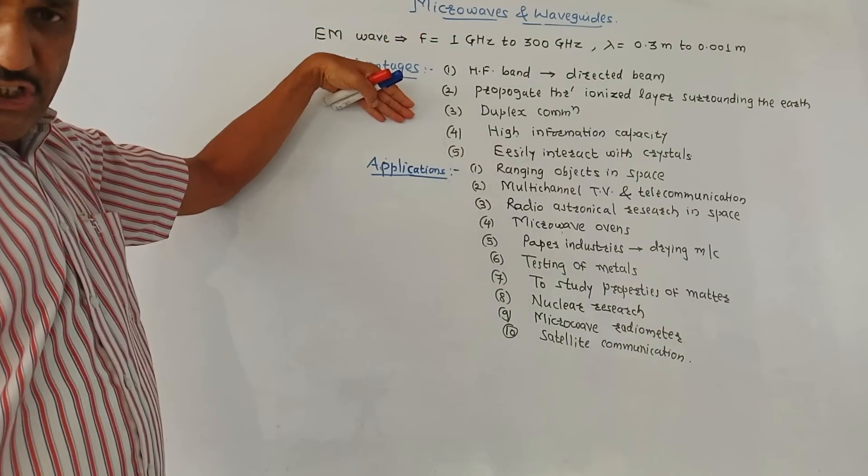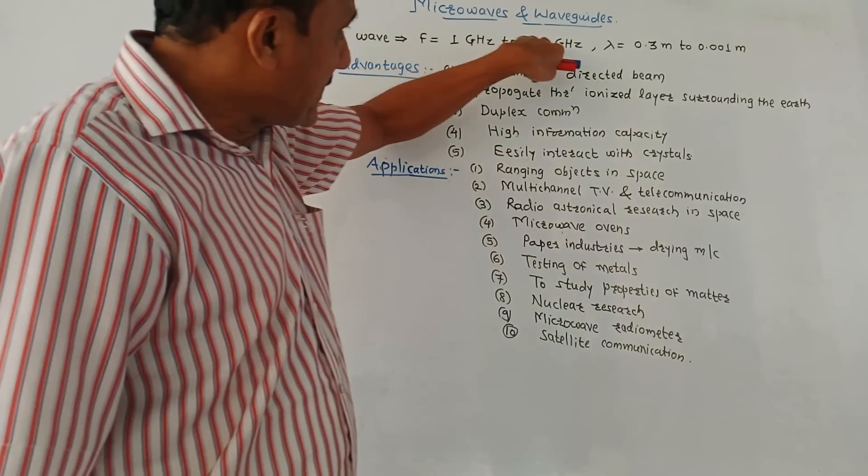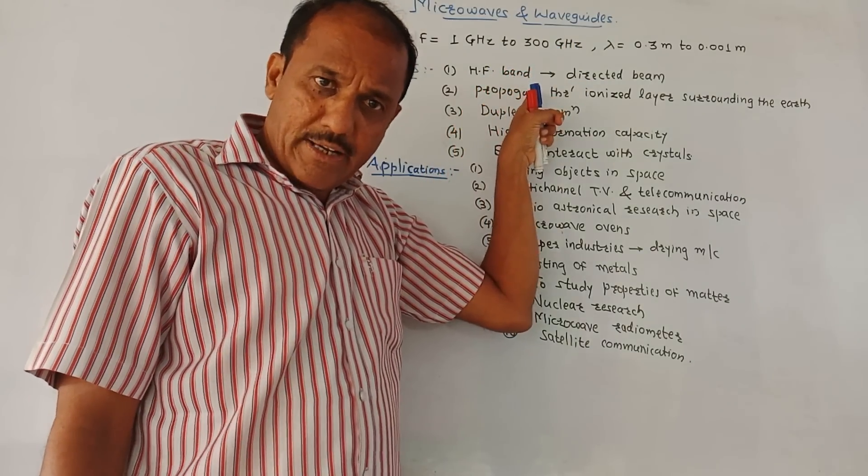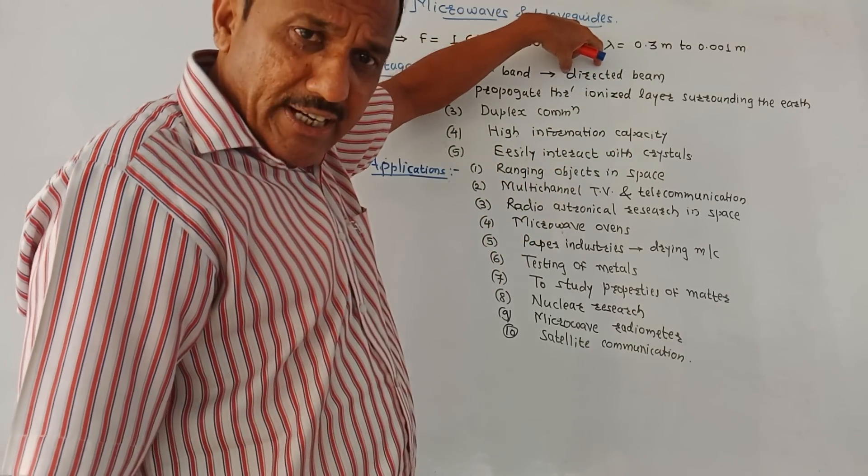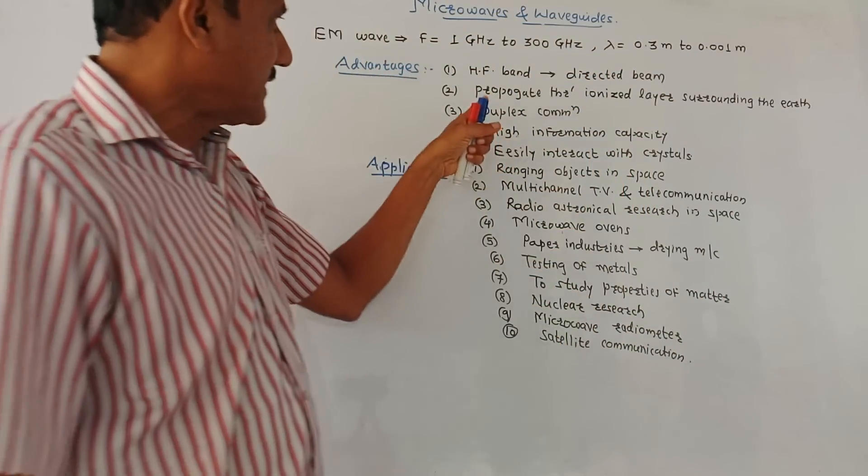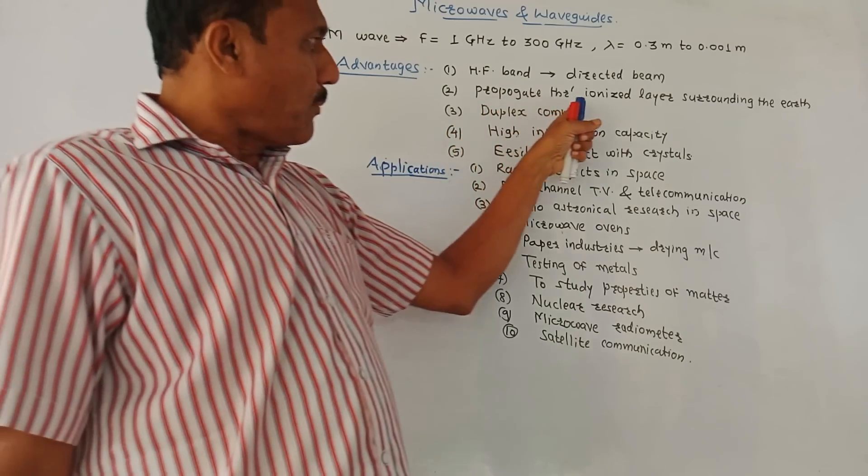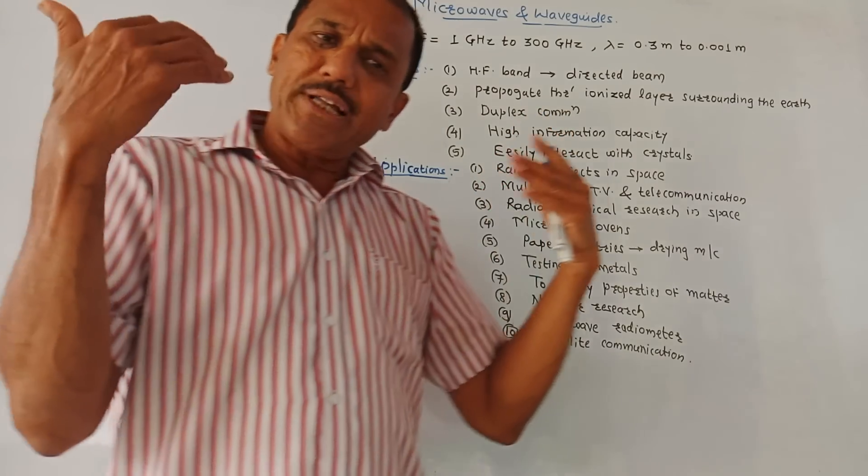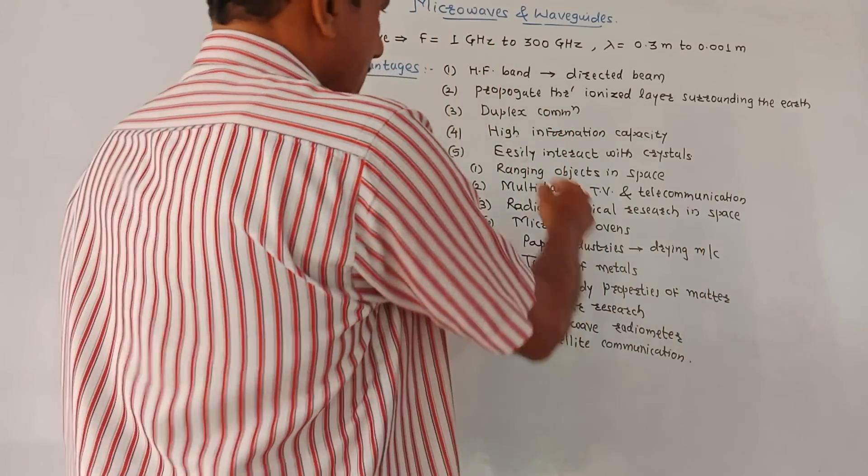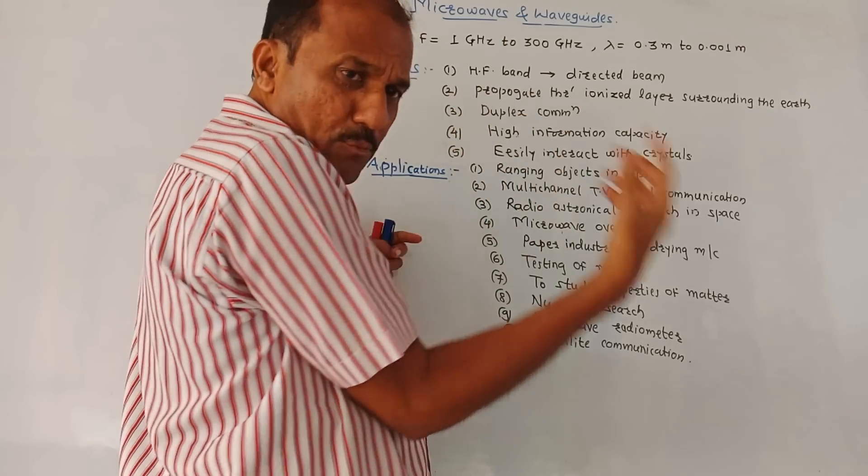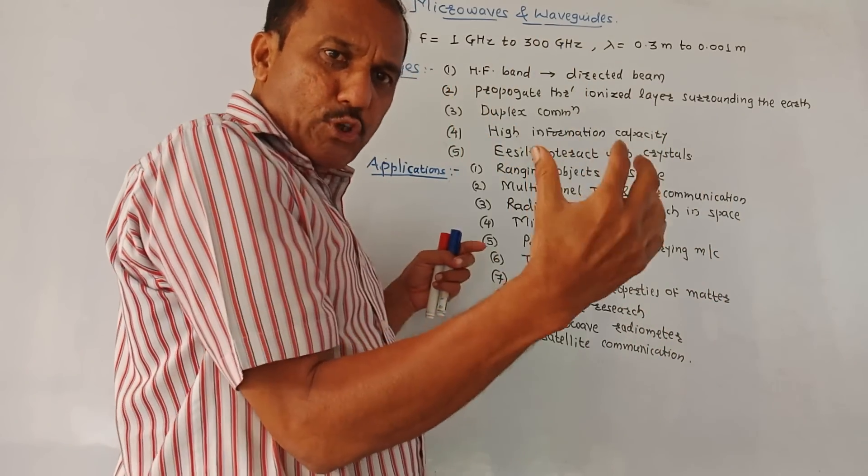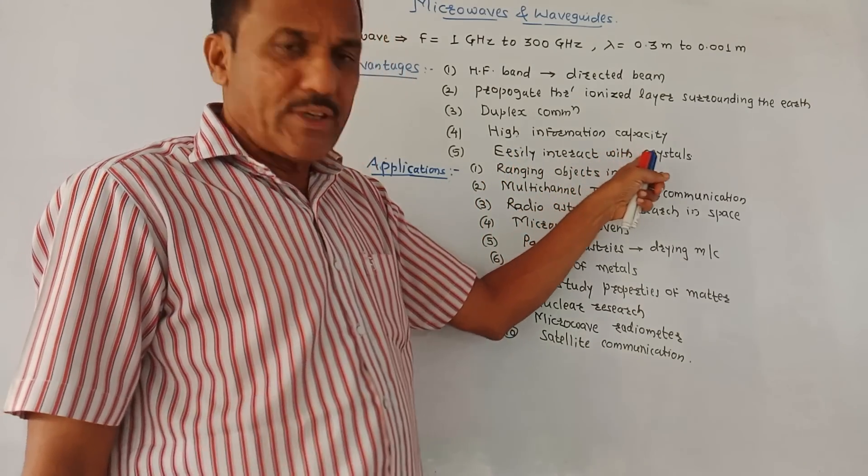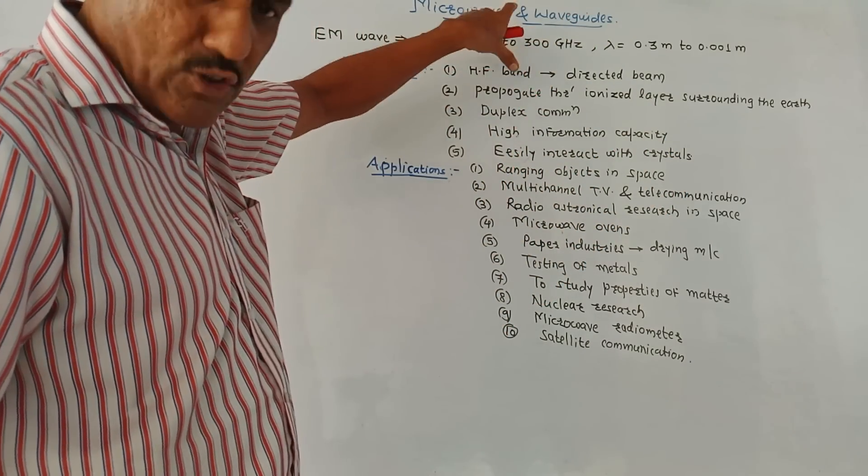Now let us talk about advantages. This frequency band is actually a large frequency band. So microwaves are having high frequency band and because of which it can generate a directed beam of microwave signals. Second, microwaves can propagate through ionized layer surrounding the earth. Third, it can be used for duplex communication. We know that duplex is two-way communication. Next, it carries high information. So microwaves are supposed to be having high information capacity. Next, it can easily interact with the crystal. So these are few advantages of microwave signals.